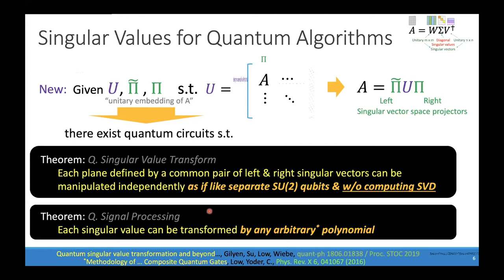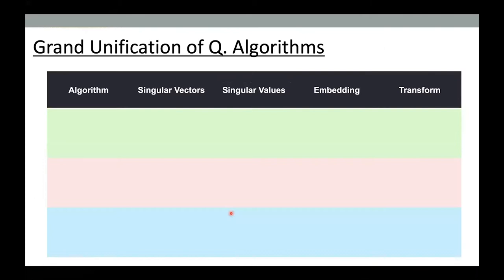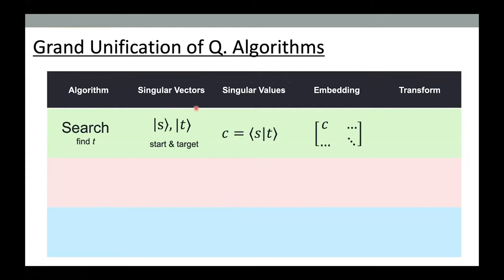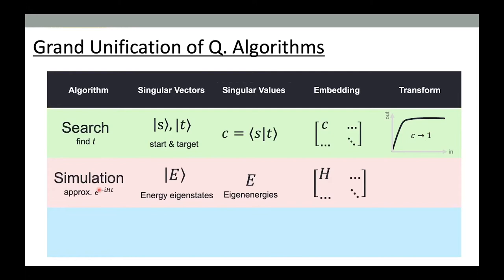Why are these two theorems remarkable for quantum algorithms? The search problem has natural singular vectors — the start state and the target state — with singular value equal to their overlap c. The embedding is this scalar c inside a unitary matrix. If we can transform the overlap from whatever it initially is to 1, then the start and target become identical and we know the target state. So if you can perform a polynomial transformation that takes c to 1, you can implement the search algorithm.